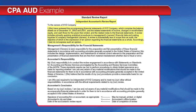The introductory paragraph doesn't have a heading, but states that a review has been conducted, provides the name of the entity, specific information about the statements on which the accountant is reporting, and the date or period covered by each statement. It states that a review primarily includes applying analytical procedures to management's financial data and making inquiries of company management. It clarifies that a review is less in scope than an audit and that an opinion is not being expressed on the financial statements.